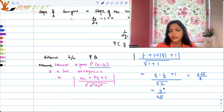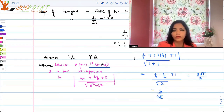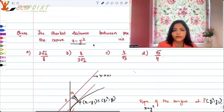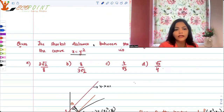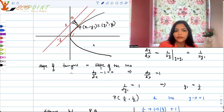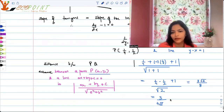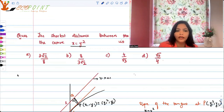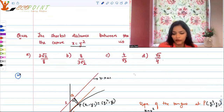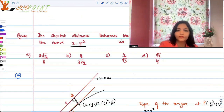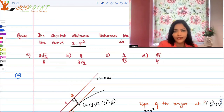So the answer is 3√2 upon 8. Looking at the options, 3√2 upon 8 is correct — option A is the correct answer. We used the formula for finding the distance between a point and a line. I hope this helps you in answering any such questions.